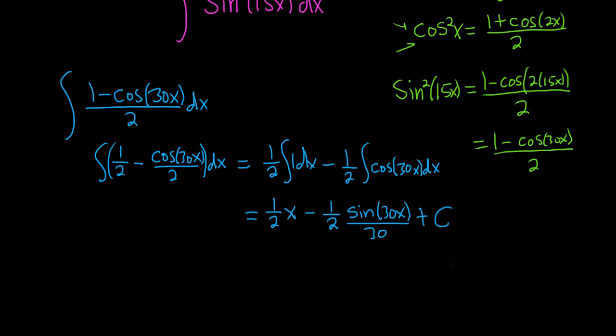You could show the work here, by the way. It just requires a u substitution. You would let u equal 30x and go from there. Typically, though, we don't spend time with stuff like that. It comes up too often, so it's just better to just divide and skip the steps. So this is 1 half x minus 1 60th sine 30x.